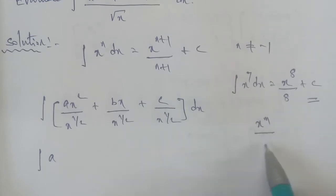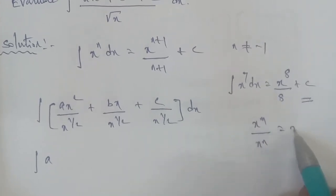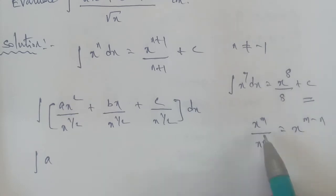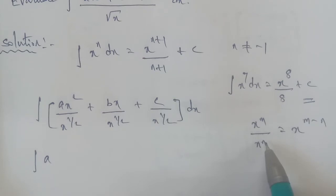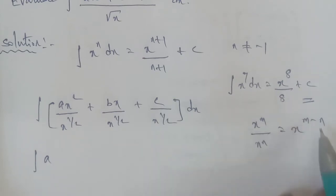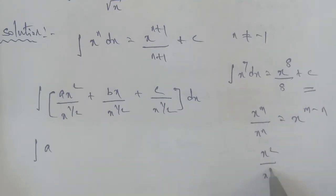Using the index law: x power of m divided by x power of n equals x power of m minus n. So we apply this: ax² divided by x power of 1 by 2.